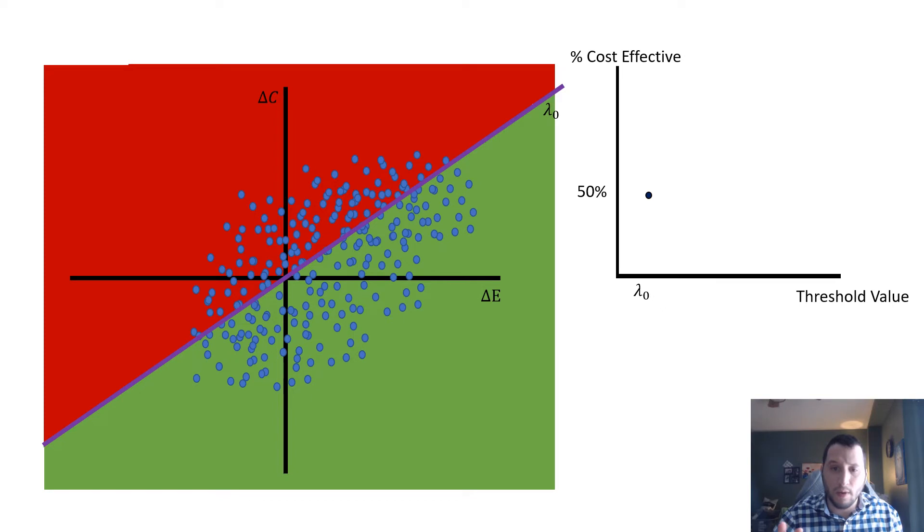We can think about plotting this relationship between our threshold value and our percentage of this population that it's cost-effective for as follows: by saying at lambda naught, it is about 50% cost-effective.